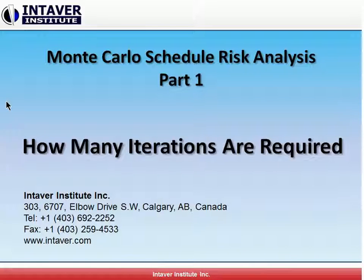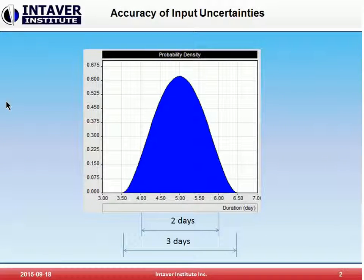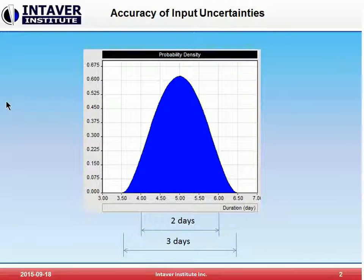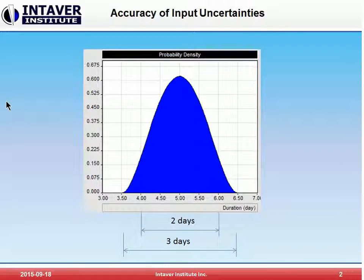There is a common belief that if you increase the number of iterations in a Monte Carlo simulation, you will increase the accuracy of the results. But remember, the accuracy of the results depends on the accuracy of the input data — or in our case, how we define the statistical distributions for cost, duration, and other parameters.